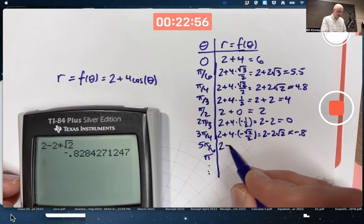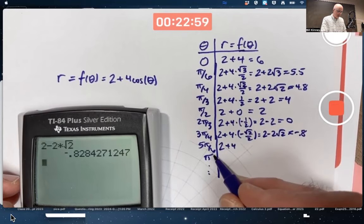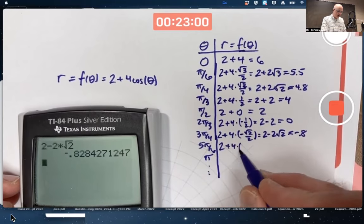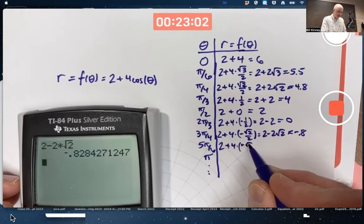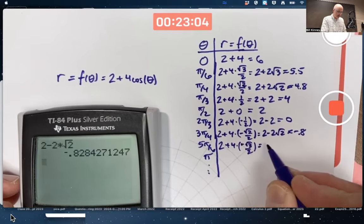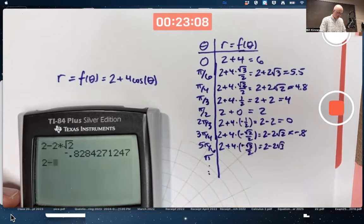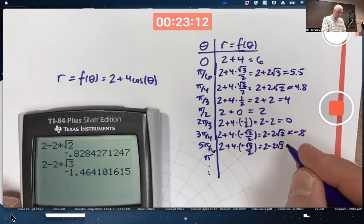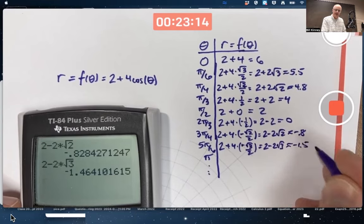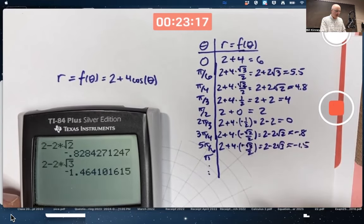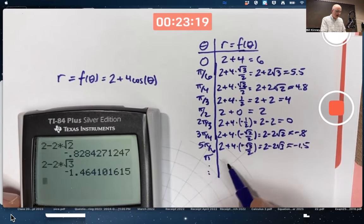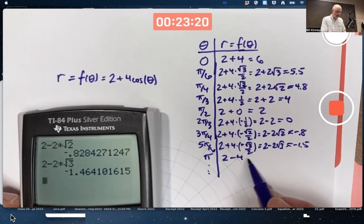A couple more. 2 plus 4 times cosine of 5 pi over 6 is negative root 3 over 2. So we end up with 2 minus 2 root 3. Negative 1.5 approximately. Cosine of pi is negative 1. We get 2 minus 4, negative 2.